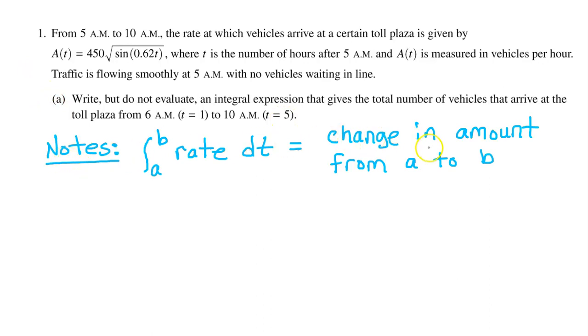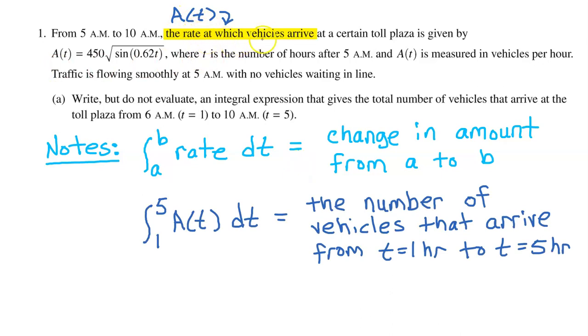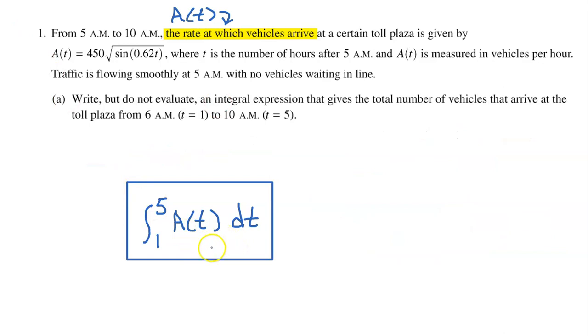This is not part of my answer, and I will erase this in a moment, but here are some notes that you need to know. The integral of a rate from a to b is equal to the change in the amount from a to b. This is one way of writing the first fundamental theorem of calculus. Since A(t) is the rate at which vehicles arrive at the toll plaza, then the integral of A(t) from 1 to 5 gives the number of vehicles that arrive at the toll plaza from t equals 1 hour to t equals 5 hours, and that's exactly what we were asked to find. So this is all you had to write for part A.